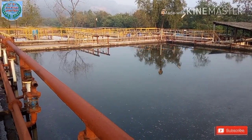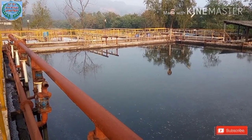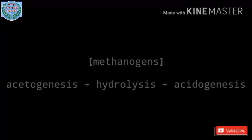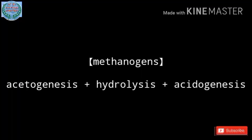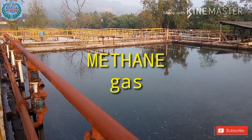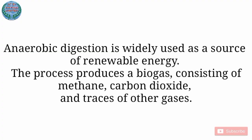Methanogenesis is the final process of anaerobic digestion, in which methanogens use the intermediate products of acetogenesis, hydrolysis, and acidogenesis to form methane gas. Anaerobic digestion is widely used as a source of renewable energy. The process produces a biogas consisting of methane, carbon dioxide, and traces of other gases.